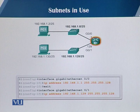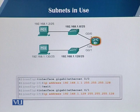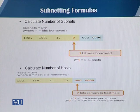Similarly, you configure the second gigabit interface with IP address 192.168.1.129, and the subnet mask is the same — 255.255.255.128 — because the number of subnet bits is the same for both subnets.